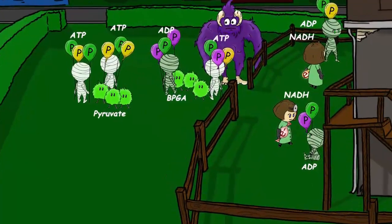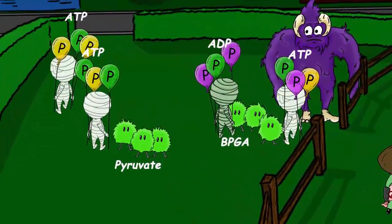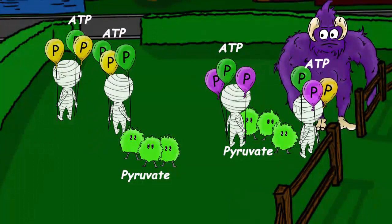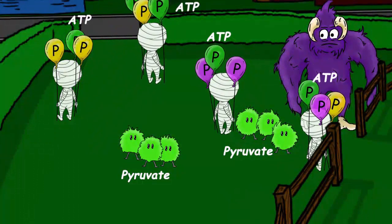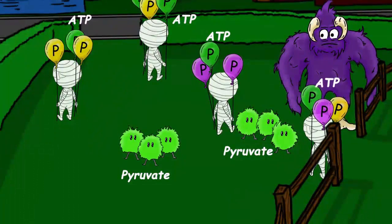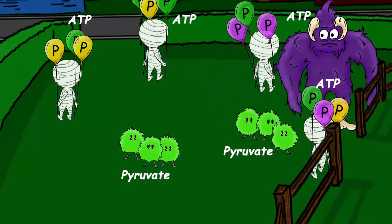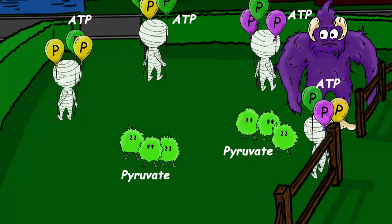Now, each of the three-carbon molecules gives up their phosphate groups to ADP molecules, making four ATP molecules. Since two ATP were put into the system, a net of two ATP are produced in glycolysis per glucose molecule. The two 3-carbon molecules are now molecules of pyruvate.